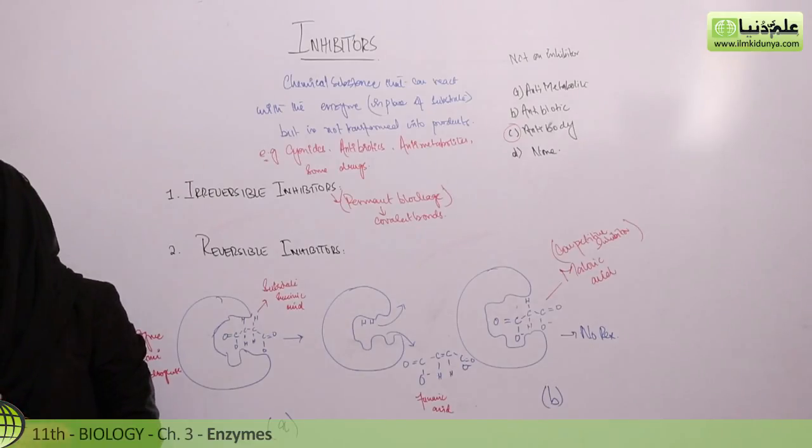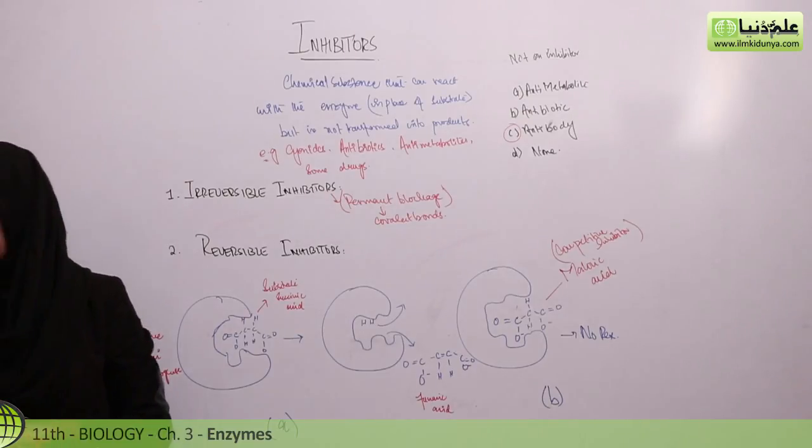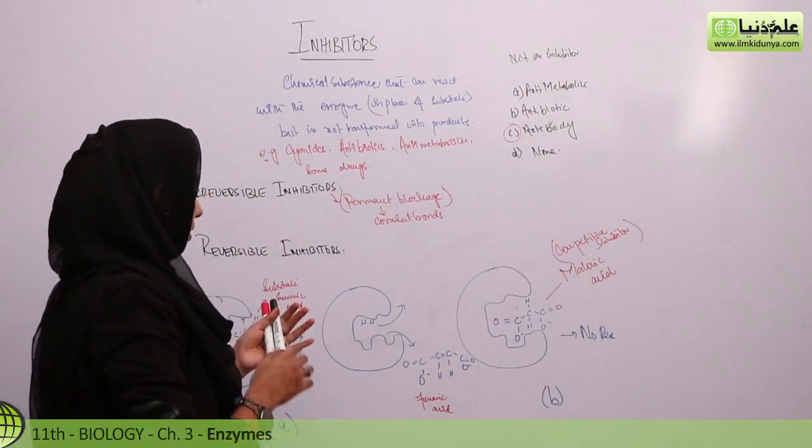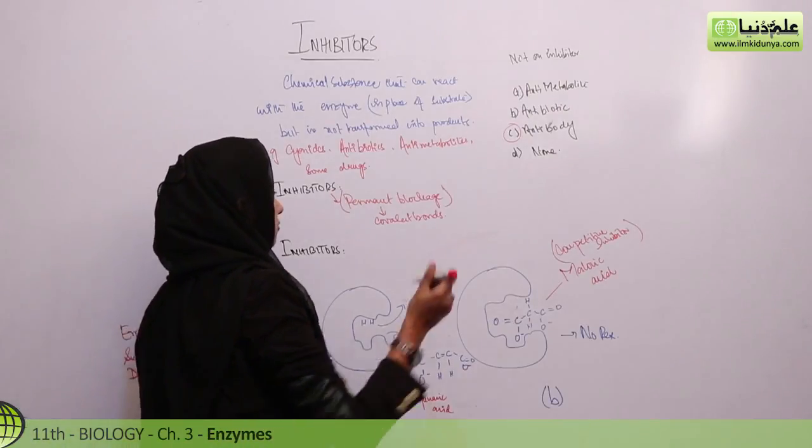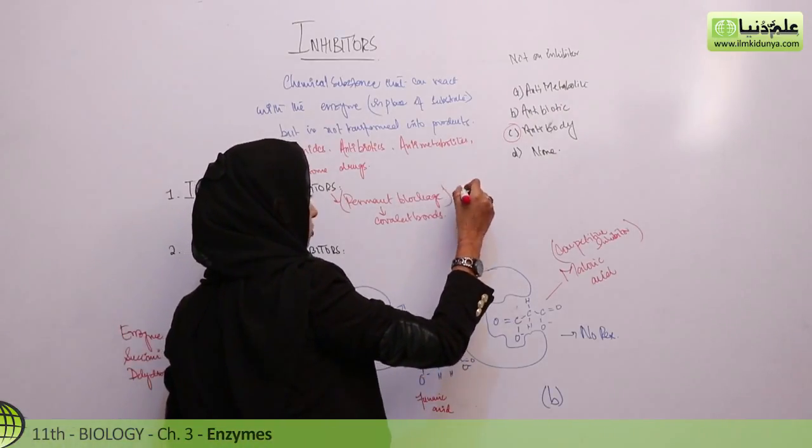They check the reaction rate by occupying the active sites or destroying the globular structure. They occupy the active site by forming covalent bonds or they may physically block the site.